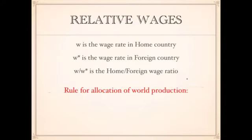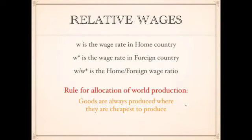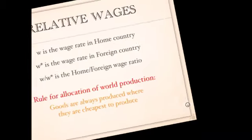A very simplistic rule for determining where goods are going to be produced: goods are always going to be produced where they are the cheapest to produce. So if it's cheaper to produce a good in the United States relative to Mexico, it'll be produced in the United States and exported to Mexico. On the other hand, if it's cheaper to produce in Mexico, it will be produced in Mexico and exported to the United States.